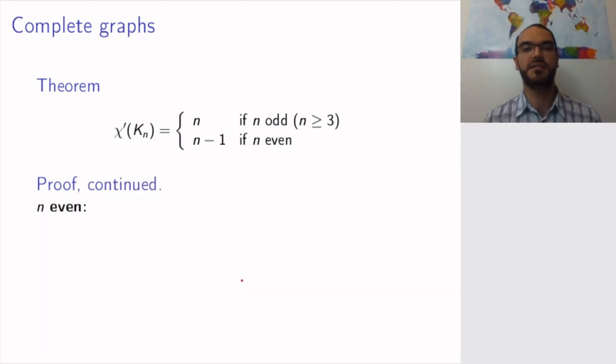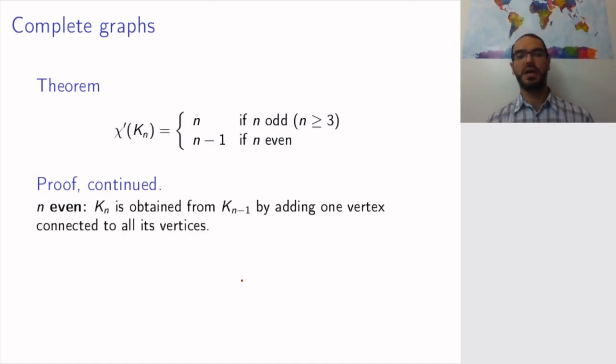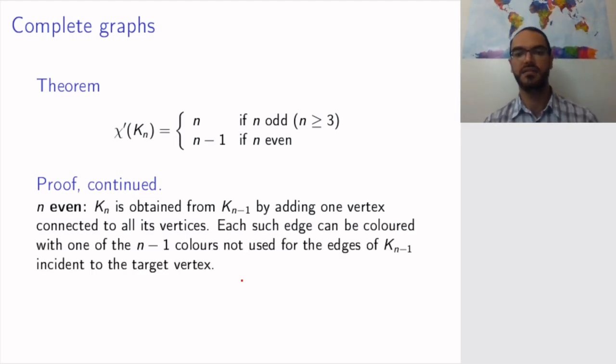So that is the odd case. Now let's look at the even case. We need to show in this case that n-1 colors are enough. So how do you get Kn? You get it from Kn-1 by adding a vertex and connected to all the vertices of Kn-1.